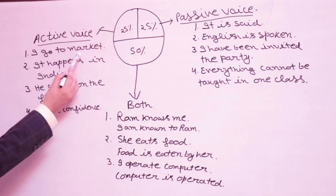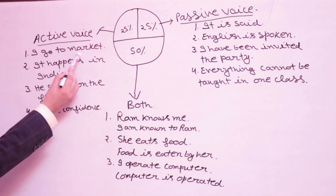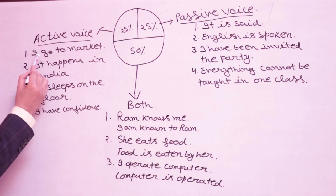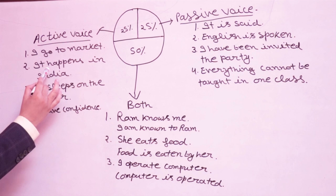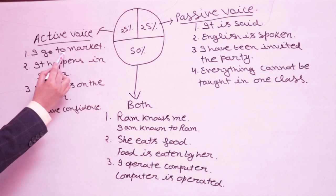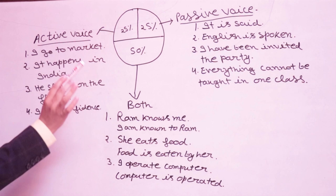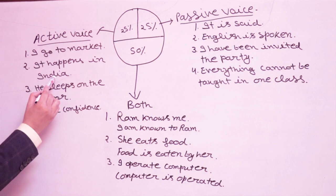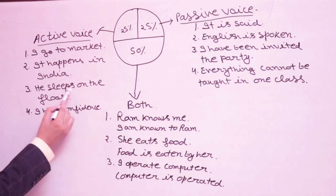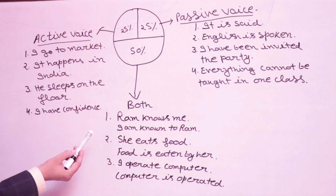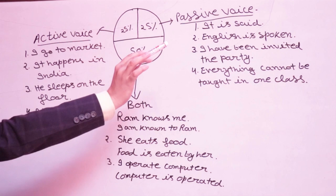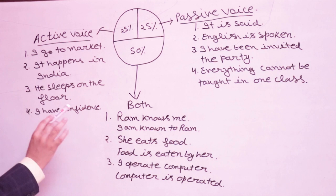Then 25 percent of sentences can only be used in active voice. For example: 'I go to market' — 'Market is gone by me' makes no sense; it is nonsense. 'It happens in India' — changing it changes the meaning entirely. 'He sleeps on the floor' — no passive. 'I have confidence' — no passive. If changing creates a meaningless sentence, leave it as it is in active voice.